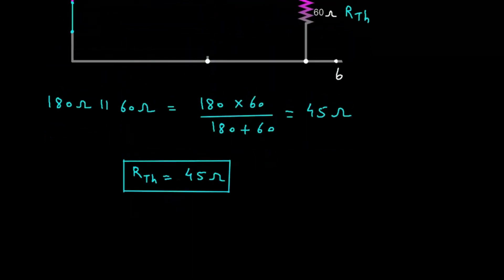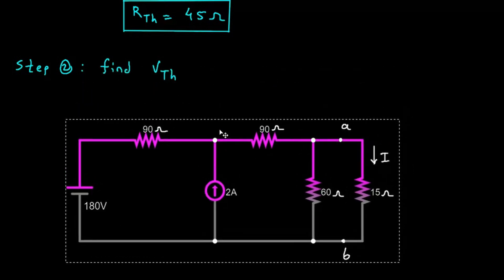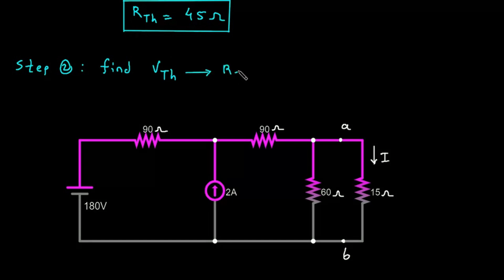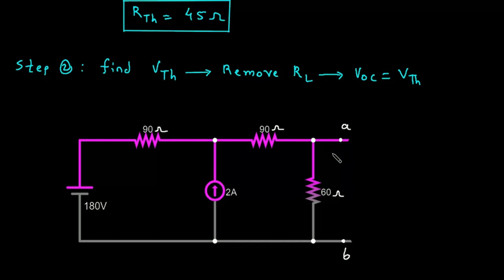Next we have to find VTH — this will be step number 2: find VTH. To find VTH, again we have to remove RL, and then the open circuit voltage will be equal to VTH. We remove RL, and this will be our VOC. So VOC is equal to VTH. Here we can clearly see the voltage across this 60 ohm will be VOC equal to VTH.